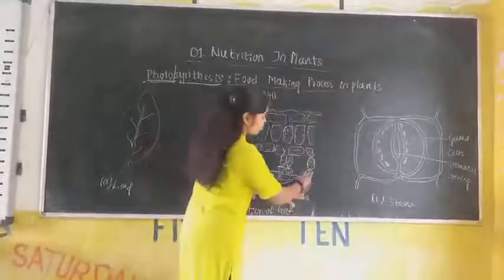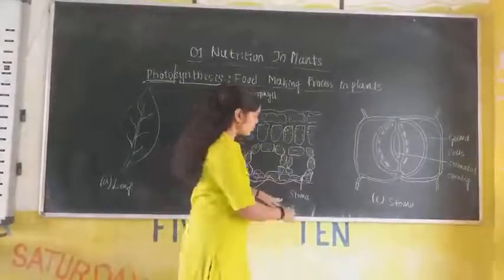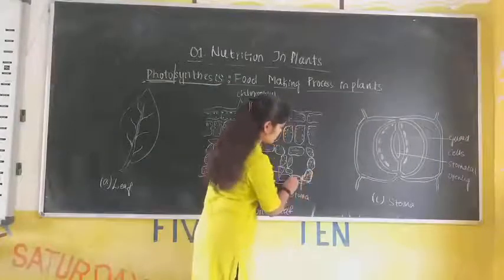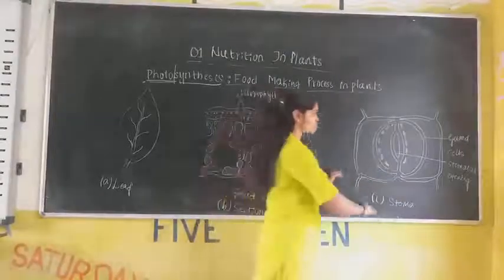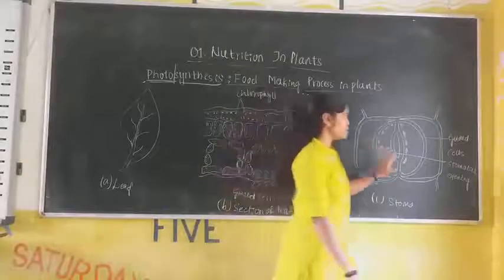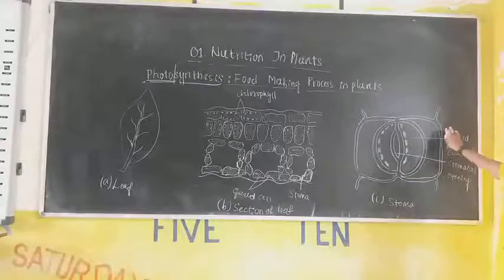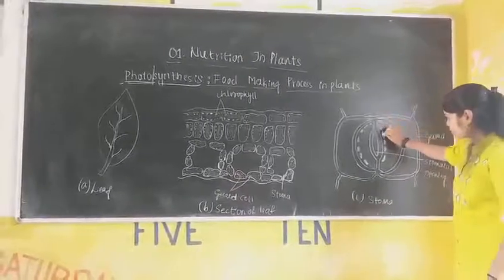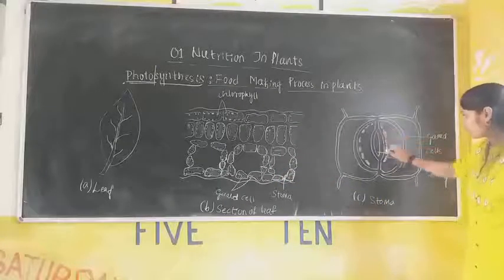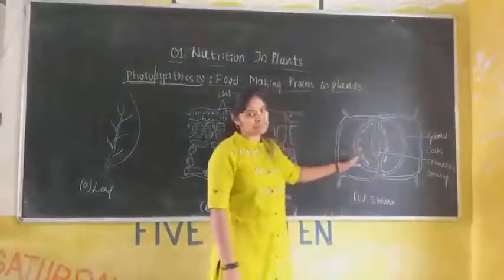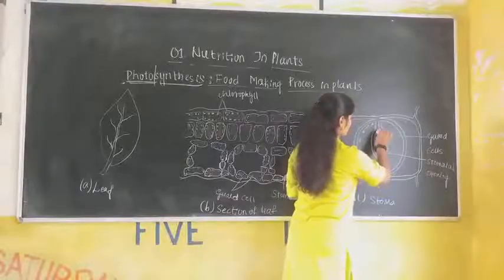And this stoma is the tiny pore which is present in the leaf, helpful for the photosynthesis process. In between, there is a tiny pore that is called a stoma. When we observe with a microscope, the stoma looks like this — made up of guard cells, which are tiny pores surrounded by guard cells. The guard cells regulate the transmission in the photosynthesis process. This is the opening of the stoma, where the photosynthesis process occurs.